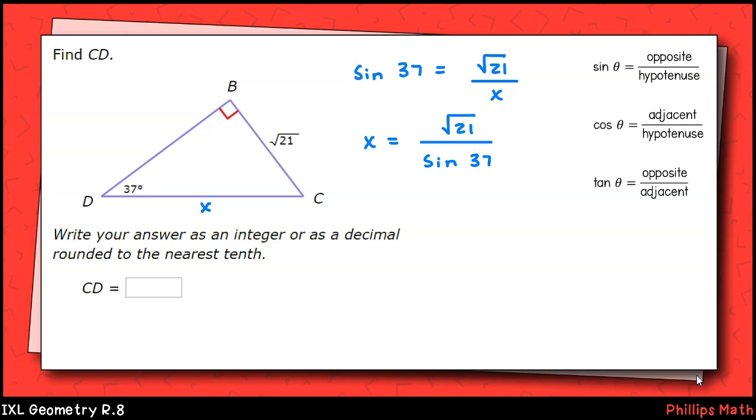To solve here, we'll multiply both sides of the equation by x and divide both sides of the equation by sine 37. Once we've solved the equation for x, we'll use our calculator to get an approximate value. That's going to be x is approximately 7.61. Rounded to the nearest tenth, that will be 7.6.